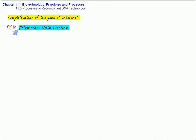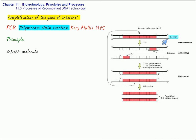And it was invented by Kary Mullis in 1985. The basic principle underlying this technique is that when a double-stranded DNA molecule, as you can see in the diagram here, when the double-stranded DNA molecule is heated to a high temperature, the two strands will separate out due to denaturation.